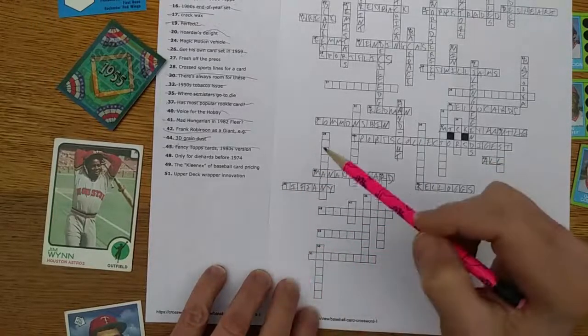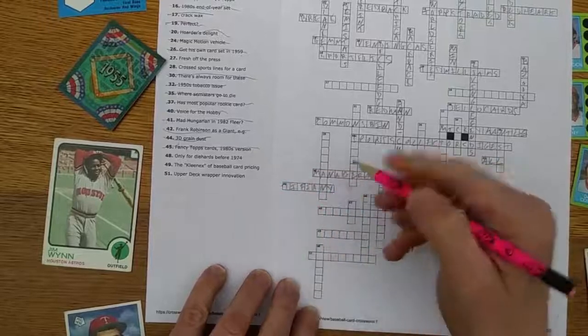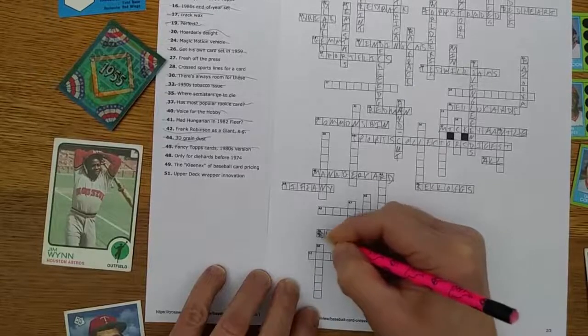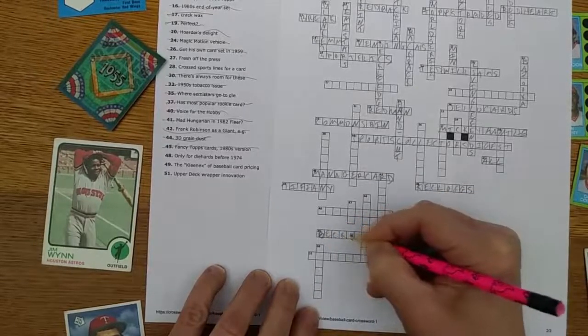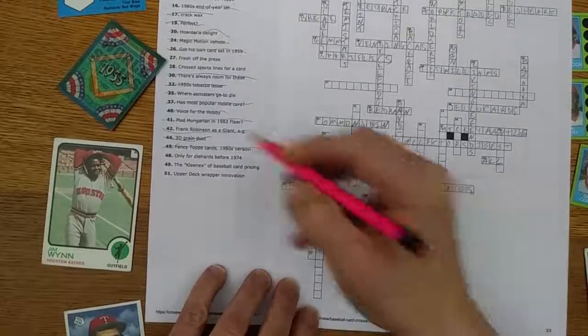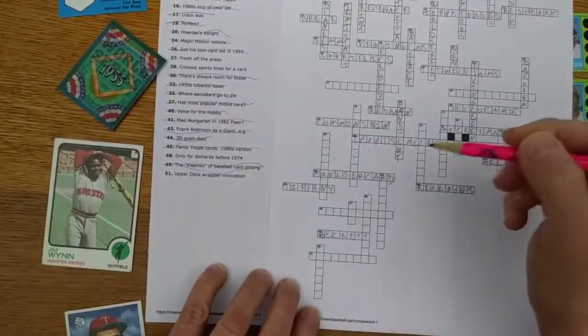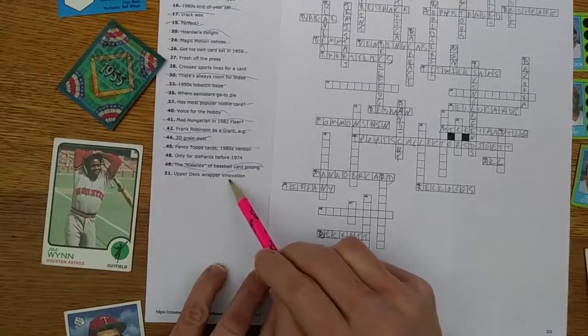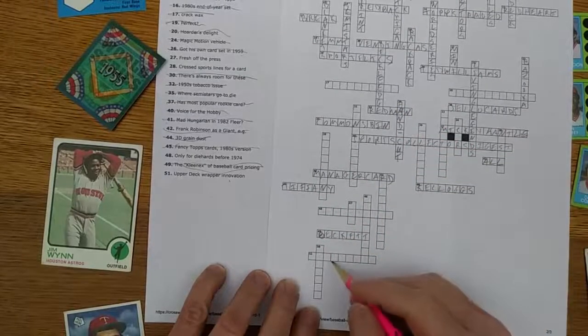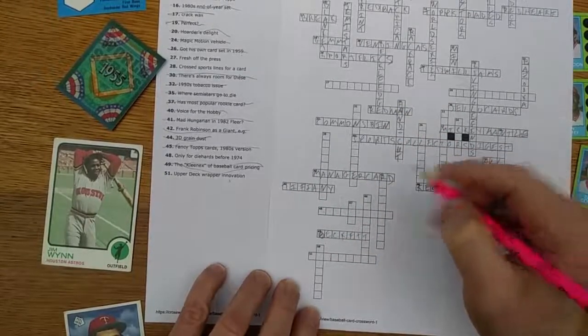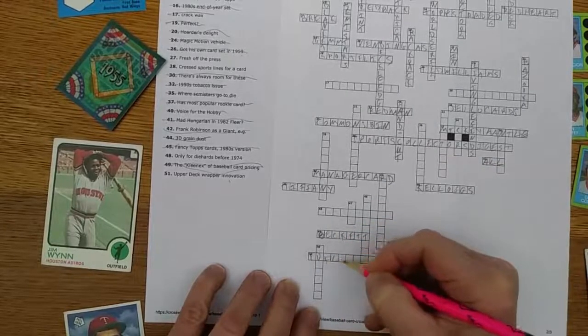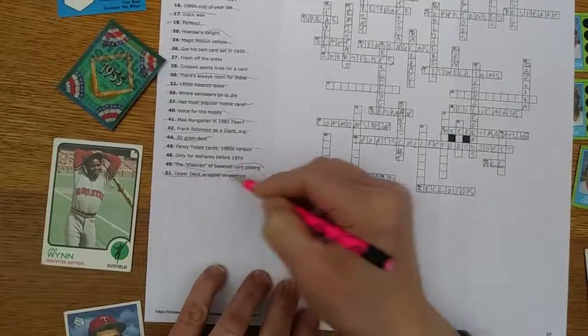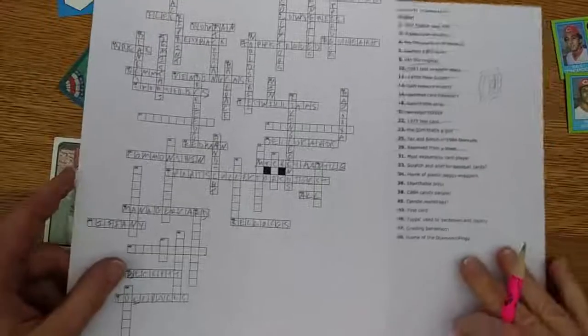The Kleenex of baseball card pricing: What's the Beckett price on that? How much is the Beckett on it? You can leave the price out. What's the Beckett on that one? Beckett, the price guide that everybody used as synonymous with just price guide. Upper deck wrapper innovation: Foil something. Foil packs maybe? That fits. I'm going with it. We'll see how it plays out when I come back to the down column.